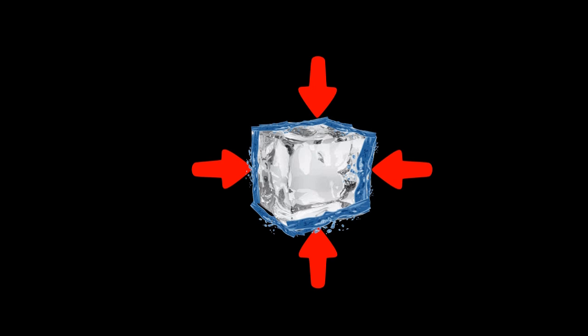To balance the increasing pressure, the water-ice system reacts in a way that will lower it. Since the liquid state of water occupies less volume than its solid state, unlike most substances, there will be a decrease of the melting temperature, allowing more ice to become water, thus decreasing the pressure of the system.